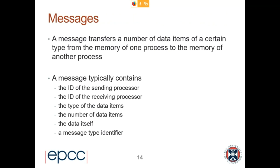Messages are the key important aspect of a message passing program. A message transfers a number of data items of a certain type from the memory of one process to the memory of another. A message typically contains: the ID of the sending processor, the ID of the receiving processor, the type of the data items — needed because the receive buffer is completely independent from the send buffer — the number of data items, the data itself, and usually some identifier for the message plus other bookkeeping. There is always a certain overhead in messages for practical reasons.